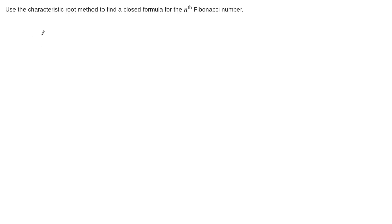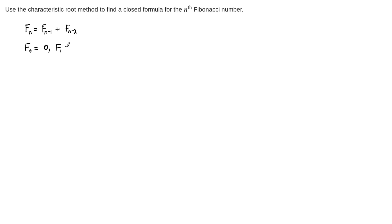In this example, we're going to use the characteristic root method to find a closed formula for the nth Fibonacci number. The Fibonacci sequence is defined recursively by f_n = f_{n-1} + f_{n-2}. This is a second-order recurrence relation with constant coefficients, both equal to 1. The initial conditions are f_0 = 0 and f_1 = 1. This is what we want to solve.